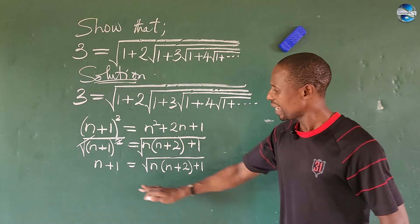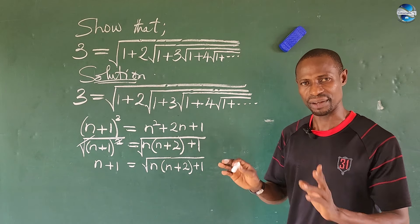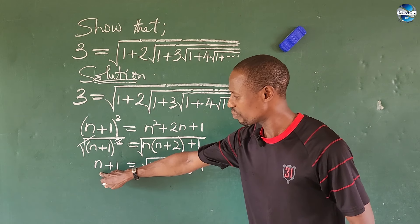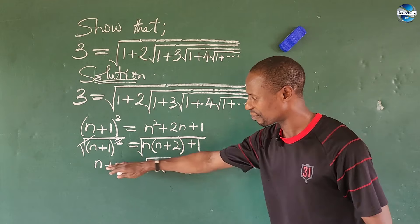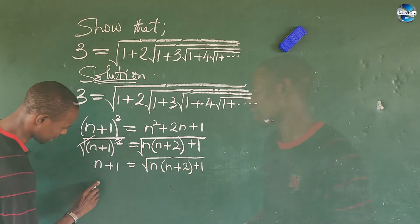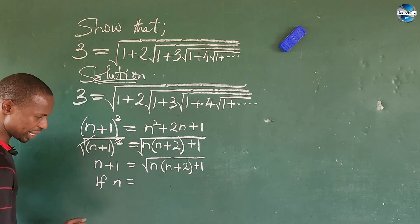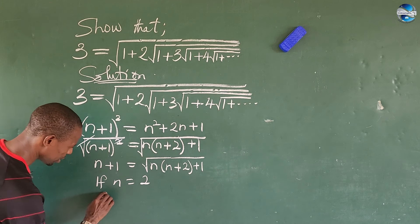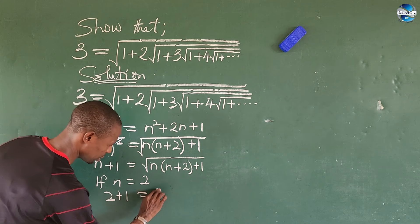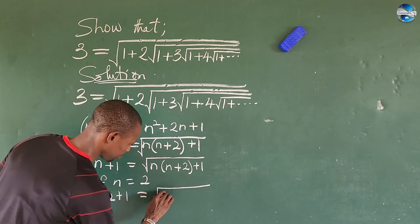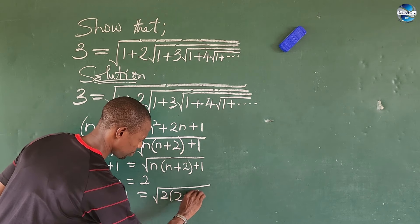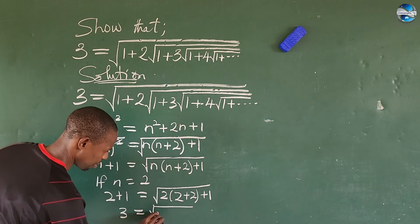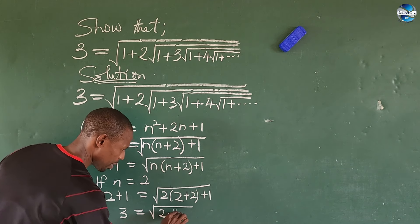Now remember we said n is a set of positive integers: 0, 1, 2, 3, da-da-da, to infinity. Now if I substitute n equal to 2, what would be the expression from here? So if we put n equal to 2, this will give us 2+1 equals the square root of 2 into (2+2) plus 1. This gives us 3 equals the square root of 2 times 4, plus 1.